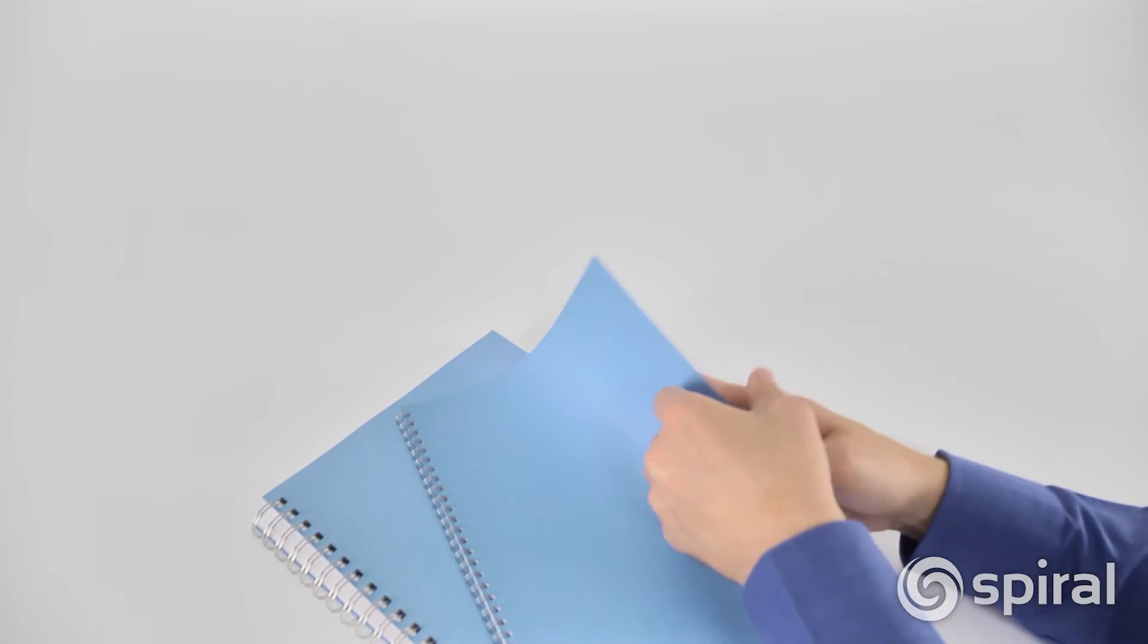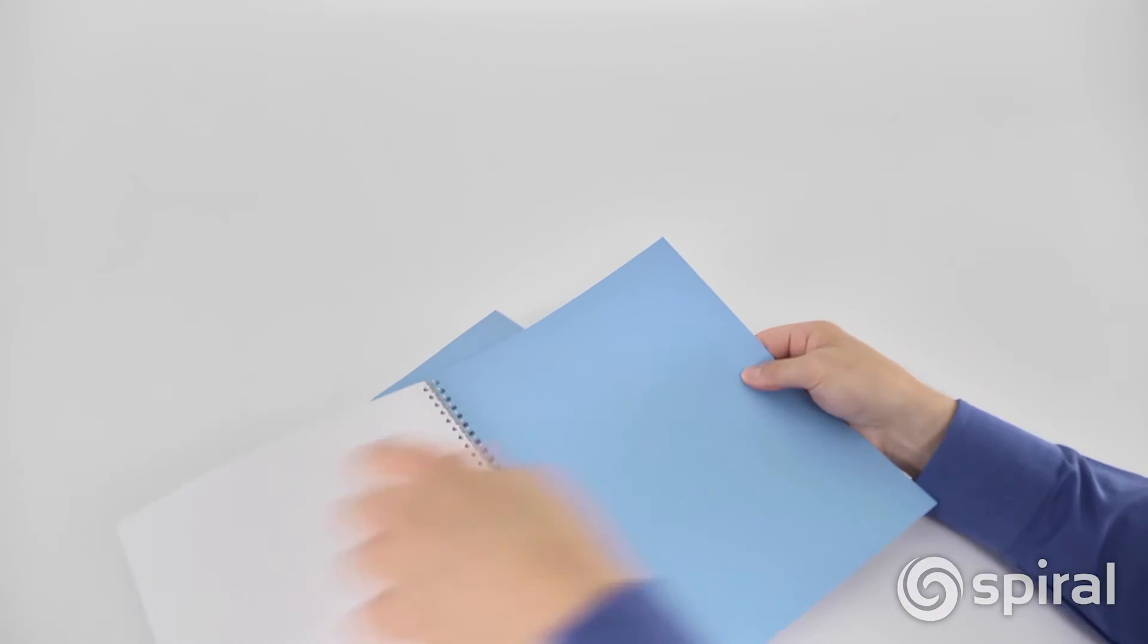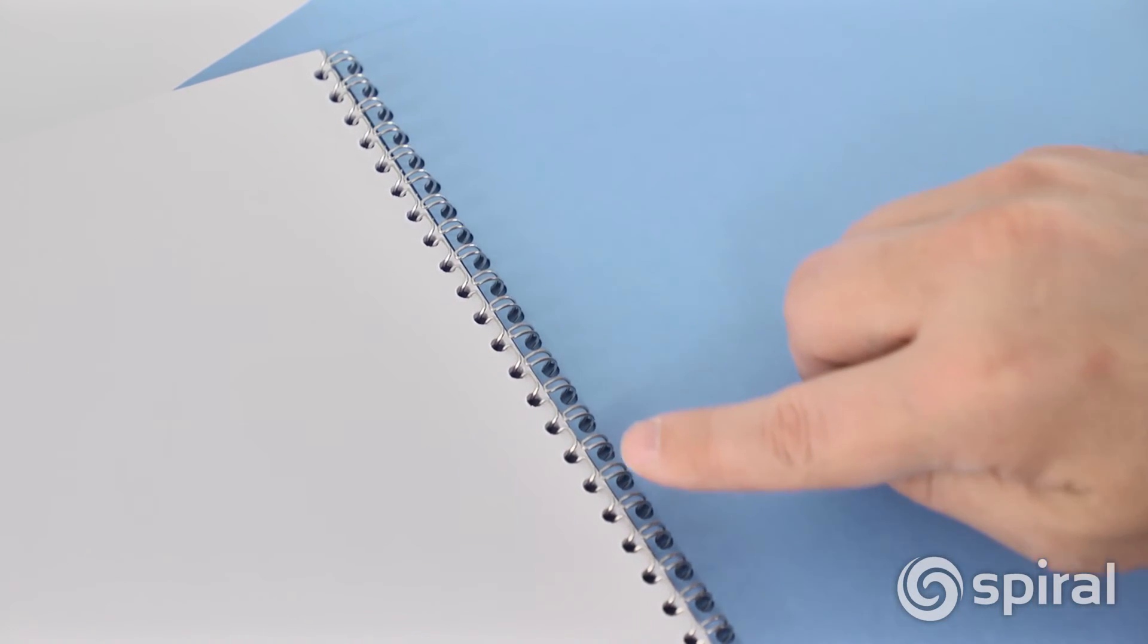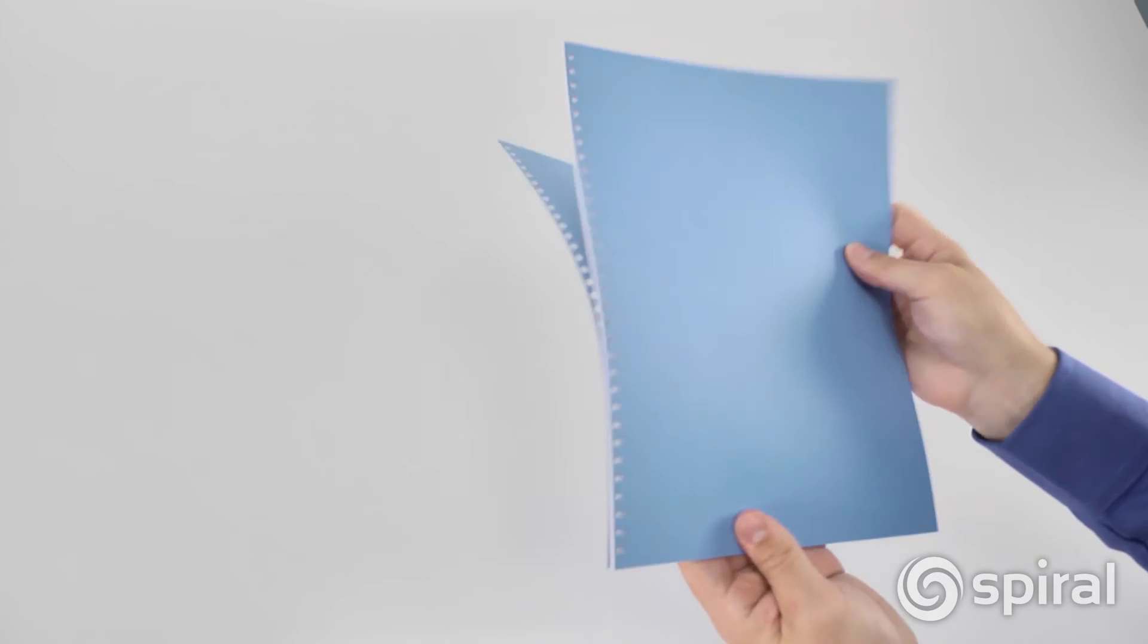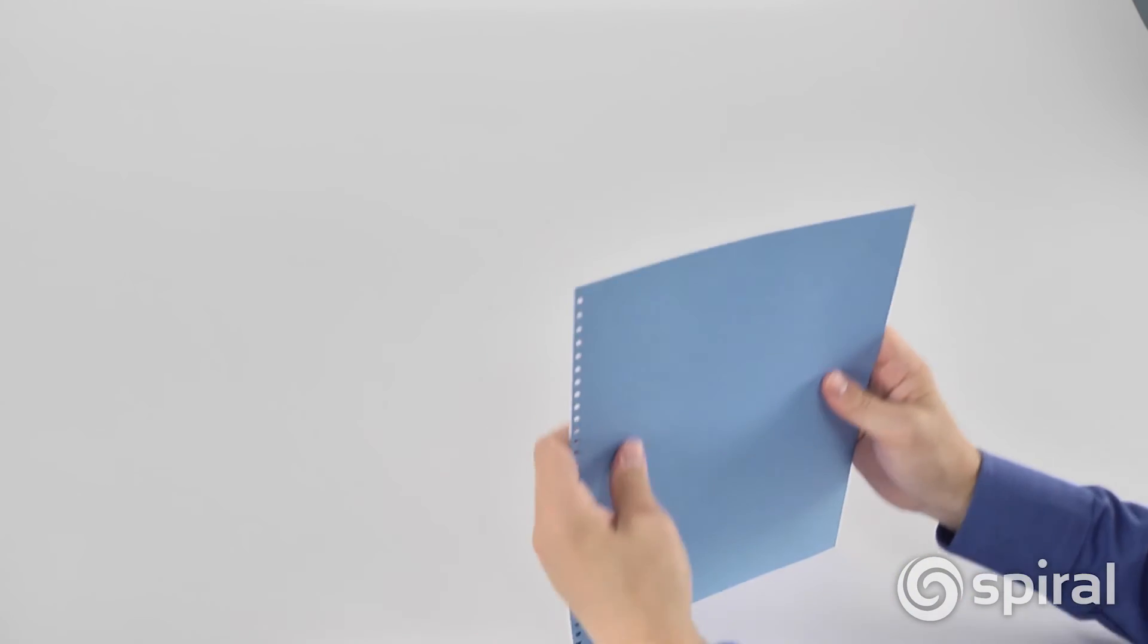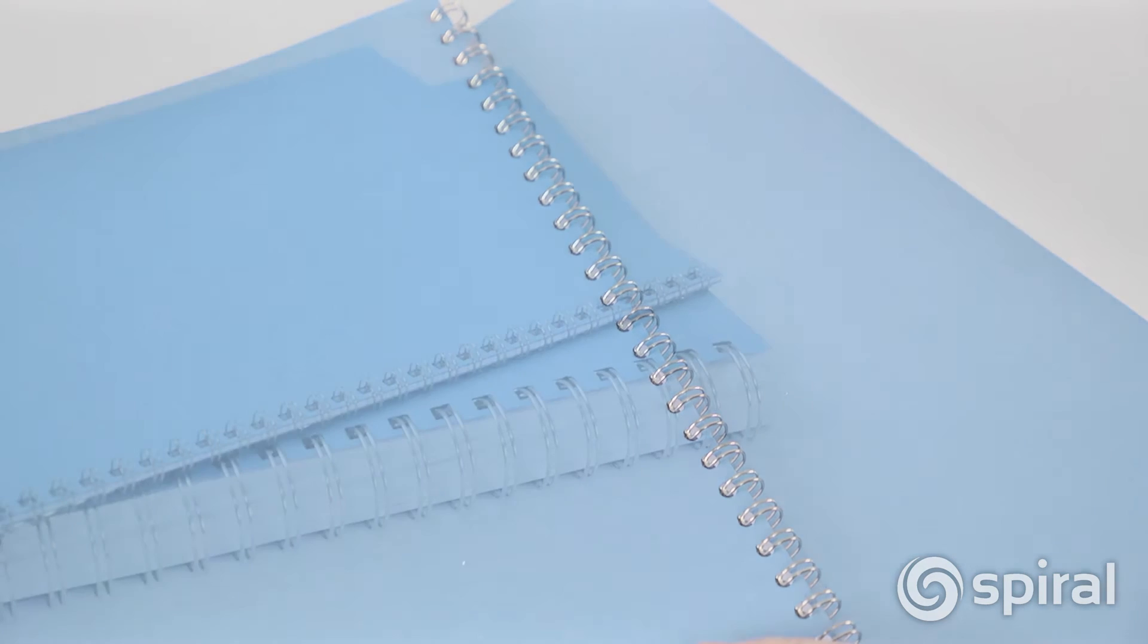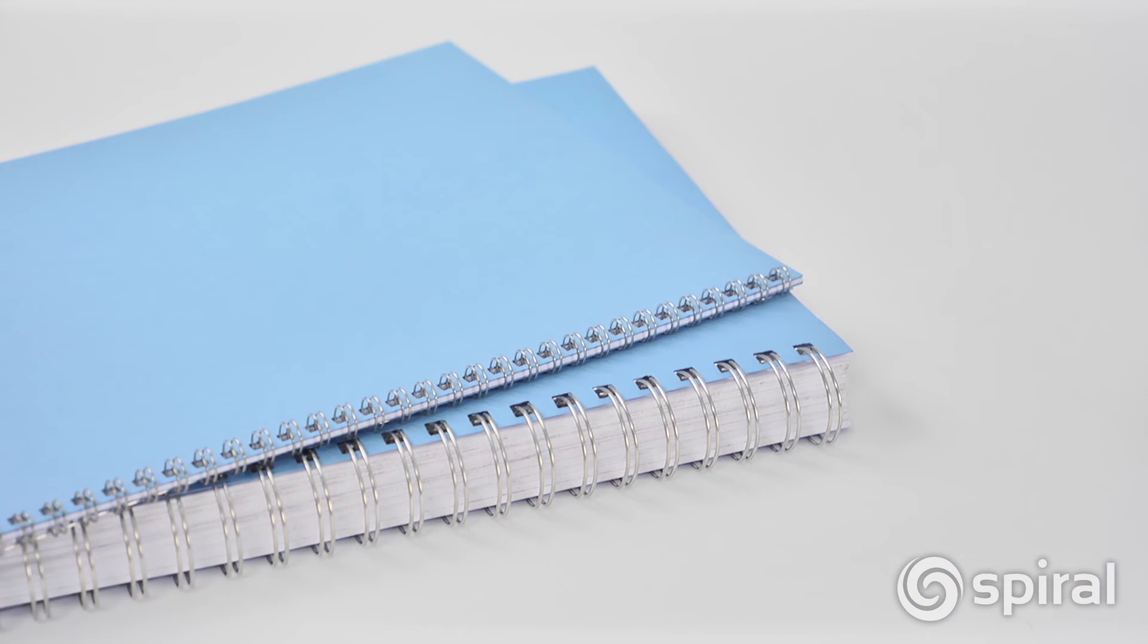To provide the most professional-looking documents, you can hide the junction where the wire loops come together between the last page and the back cover. Simply turn your back cover over onto the front cover with the inside of the back cover facing out. Then, after you close the wire, simply flip the back cover over and the wire junction is hidden, giving you a perfect document every time.